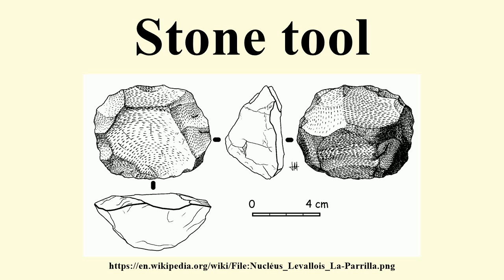The earliest known Oldowan tools yet found date from 2.6 million years ago, during the Lower Paleolithic period, and have been uncovered at Gona in Ethiopia. The Oldowan industry subsequently spread throughout much of Africa, although archaeologists are currently unsure which hominin species first developed them, with some speculating that it was Australopithecus garhi and others believing it was Homo habilis. Homo habilis was the hominin who used the tools for most of the Oldowan in Africa, but at about 1.9–1.8 million years ago Homo erectus inherited them. The industry flourished in southern and eastern Africa between 2.6 and 1.7 million years ago, but was also spread out of Africa into Eurasia by travelling bands of H. erectus, who took it as far east as Java by 1.8 million years ago and northern China by 1.6 million years ago.